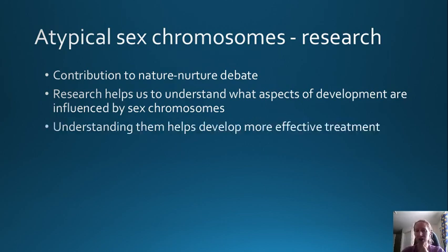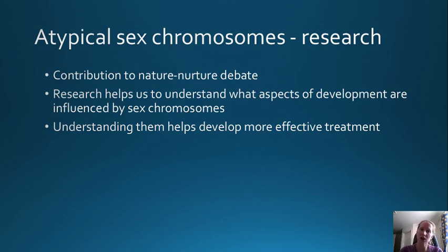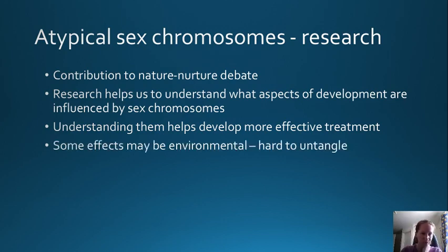Understanding these conditions also helps us develop more effective treatments. For example, people with Klinefelter syndrome can be given extra testosterone because research has shown their levels are lower - this can help them develop to be more muscular and avoid developing female body contours and breasts. Those with Turner syndrome can be monitored for their development and given growth hormones if they are not growing enough, since being very short is a characteristic of the syndrome.